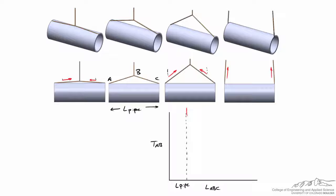As we move to the right, as L_ABC gets longer and longer, the ropes become more and more vertical, and I would expect the tension to taper off, eventually becoming horizontal on the graph, until we reach a case where the tension equals one half times the mass of the pipe times gravity.